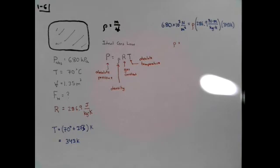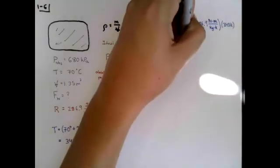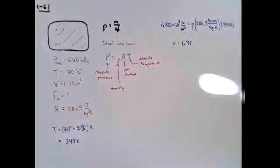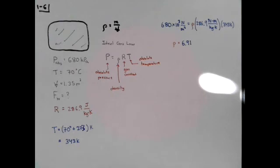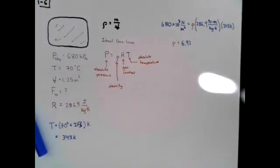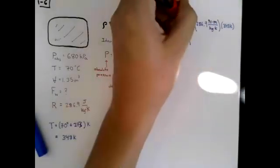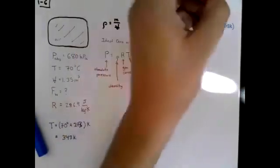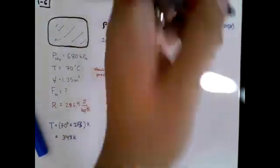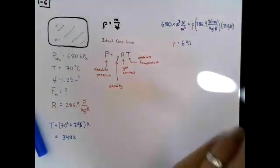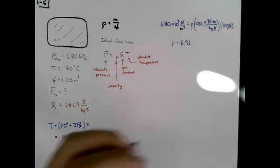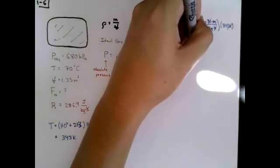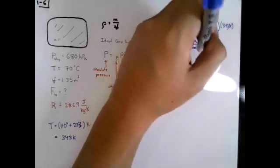If you plug all those numbers into your calculator, what does that give us? 6.91. What about units? Let's look at everything that's happening here. Notice that newtons will cancel out with newtons, Kelvin will cancel out with Kelvin, and we're left with a kilogram that moves to the other side and a meters that moves to the other side. So what does that leave us with? Kilograms per meters cubed.